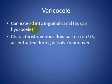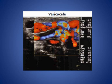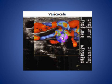Varicocele can extend into the inguinal canal, as in cases of hydrocele, and it has a characteristic venous flow pattern on ultrasound accentuated during the Valsalva maneuver. As we see here in sagittal color Doppler ultrasound, there are classic tortuous vessels in the right scrotum extending to the right inguinal region, accentuated with Valsalva maneuver.